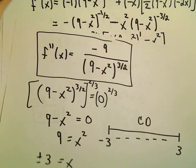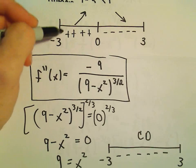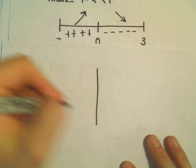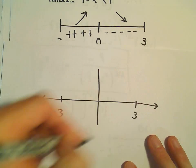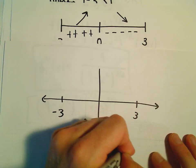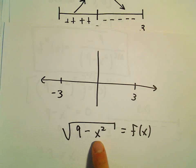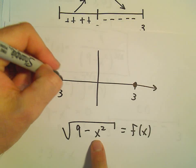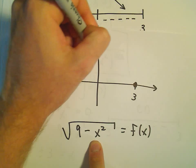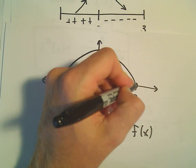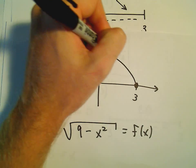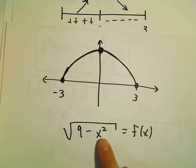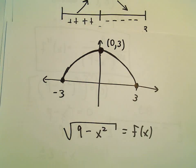We're now in a position to sketch the graph. The function goes from negative 3 to positive 3. Plugging in positive 3: we get the square root of 0, which is 0. Plugging in negative 3: same result, 0. The function increases up to x equals 0 and then decreases, and it's concave down the whole time. At x equals 0, the local maximum is the square root of 9, which is 3. So the graph has endpoints at (negative 3, 0) and (3, 0), with a peak at (0, 3).